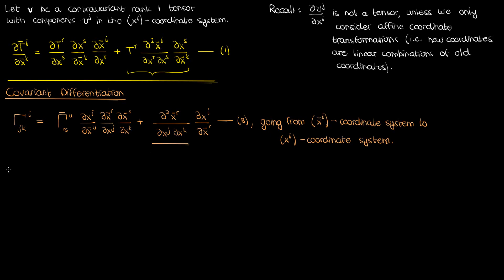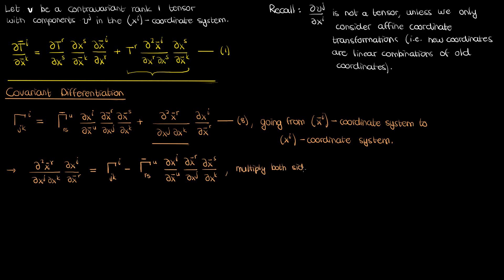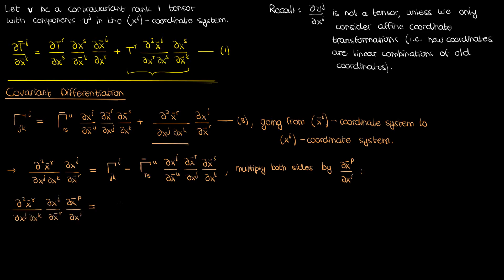The indices are a bit different, but we'll take care of that later. If I try to isolate the term involving this mixed partial derivative, this is what I get. I want to completely isolate this mixed partial derivative, and the way to do that is to multiply both sides by the partial of x super p bar with respect to x super i. I can't multiply by the partial of x super r bar with respect to x super i, because then I would have the index r in three different places in the same term, and that's not allowed in Einstein notation. So this is my equation after that multiplication.